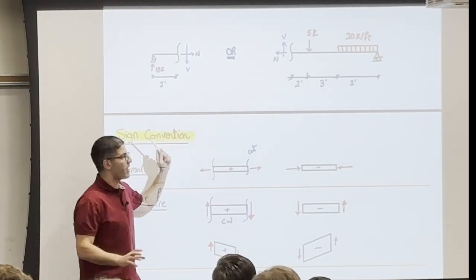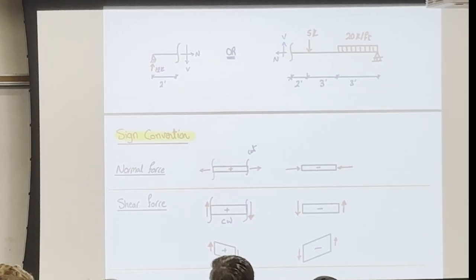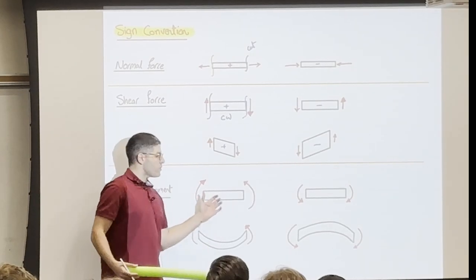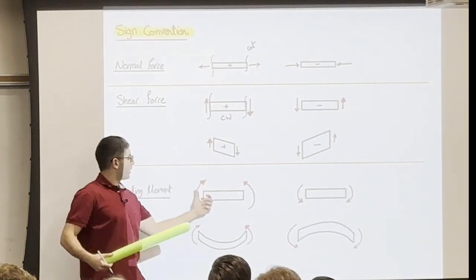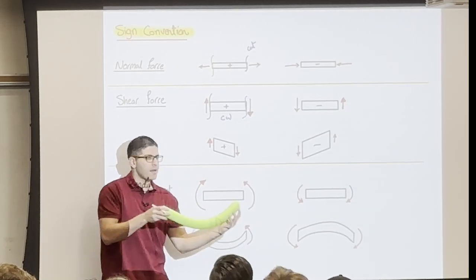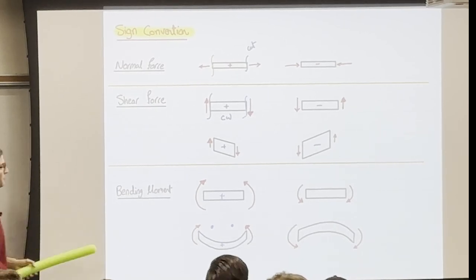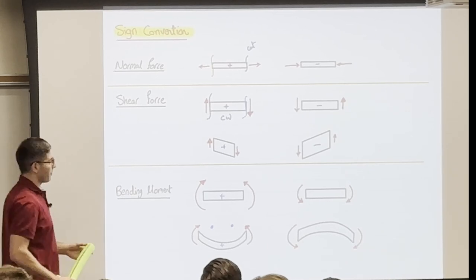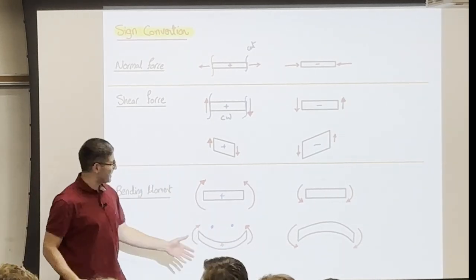For bending moment: if you make your thumb the arrow, and the beam bends into a smiley face shape, that's positive. The sad face is negative. More practically: when you draw the moment arrow, draw the curve warping toward the beam — hugging the beam. If the arrow points up, that's positive; if the arrow points down, that's negative.